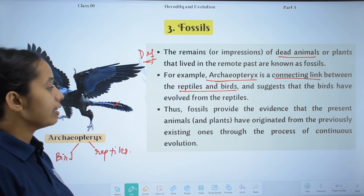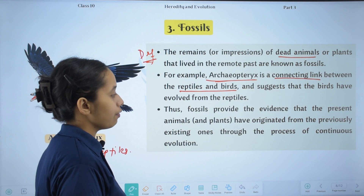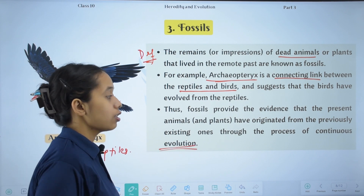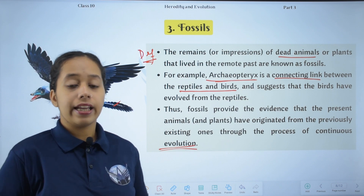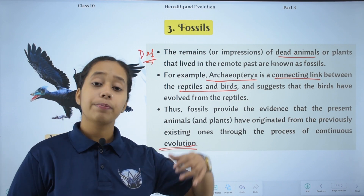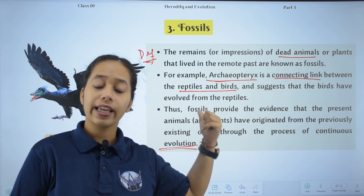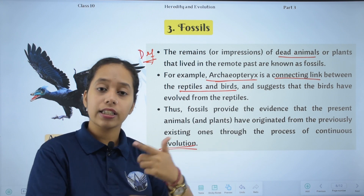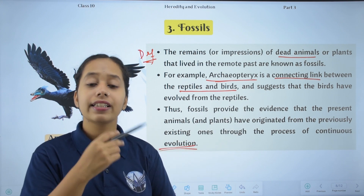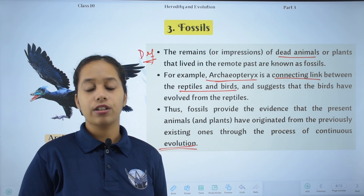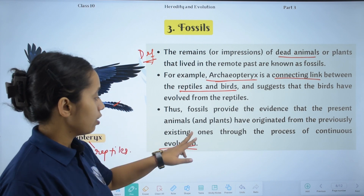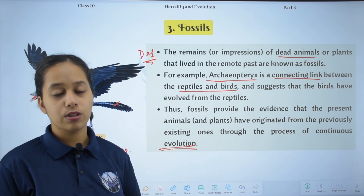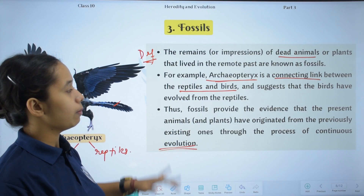Thus, fossils provide evidence that the present animals and plants have originated from previously existing organisms through the process of continuous evolution. The previously existing organisms underwent evolution, and finally the present-day animals and plants are the result. They originate from previously existing organisms through the process of continuous evolution. This is all about fossils.